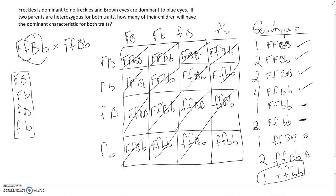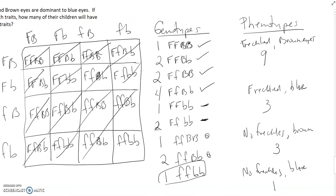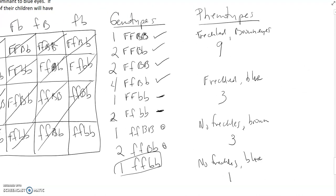How many of their children will have the dominant characteristic for both traits? So, in this case, nine out of 16 is the probability that their children will be freckled and have brown eyes.